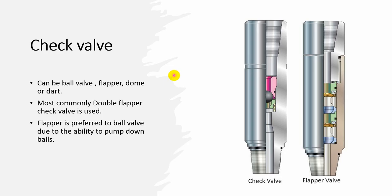After the connector, you have the check valve. The check valve can be a ball valve, flapper valve, etc. The flapper valve is the most commonly used type because it allows dropping balls and provides full-bore access, unlike a bullet check valve which prevents dropping balls, so it is not commonly used today.